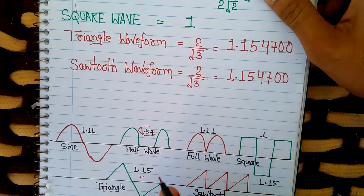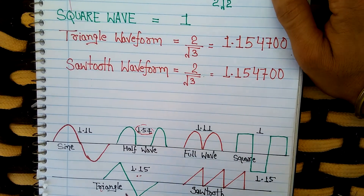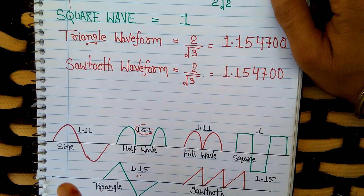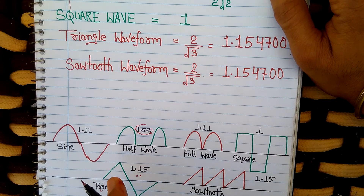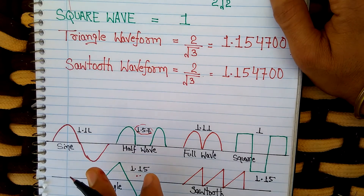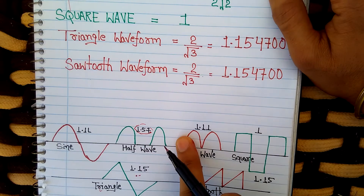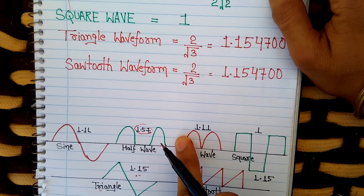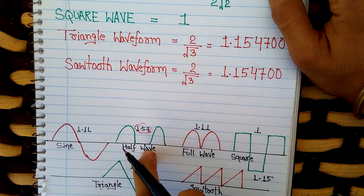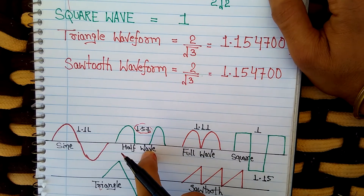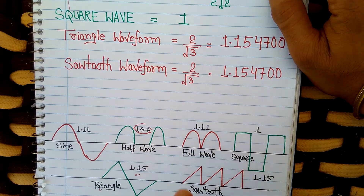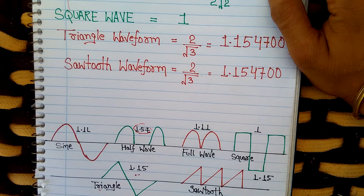So we have understood that form factor tells us about the shape of the waveform after rectification. Closer it is to one, the lesser number of ripples the waveform has and the more smooth it is.